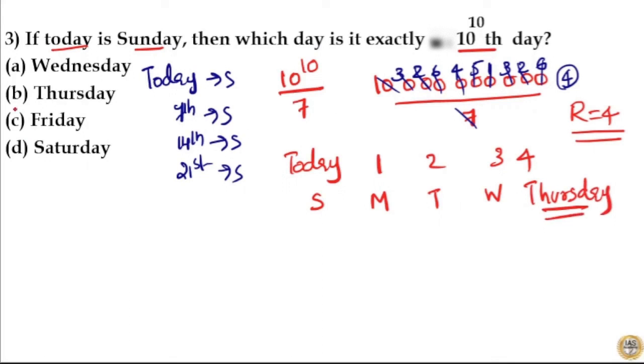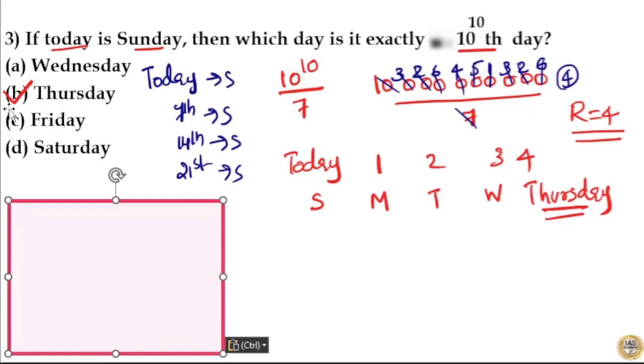Now your answer is option B. And if you have difficulties in finding the remainder here, you can use the remainder theorem. That is 10 raised to 10 by 7. Here to find the remainder, write the denominator first, that is 7.